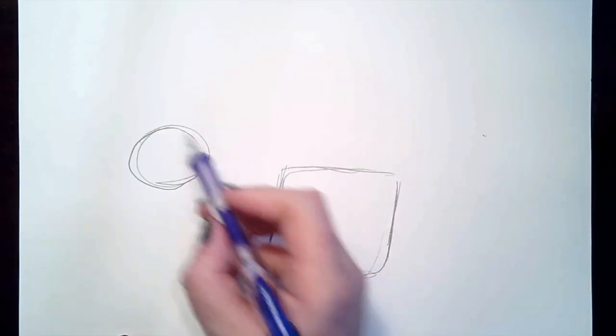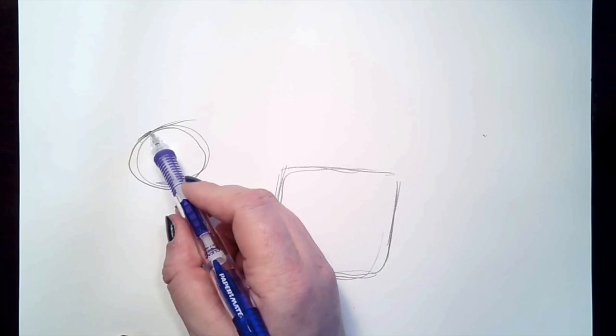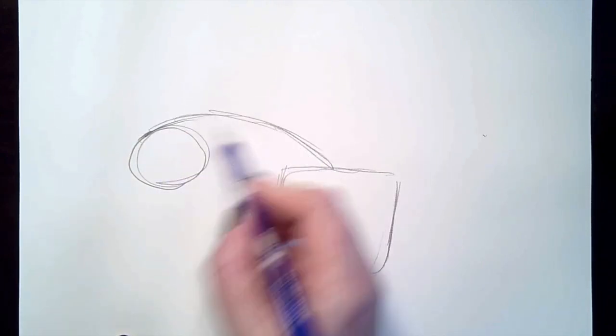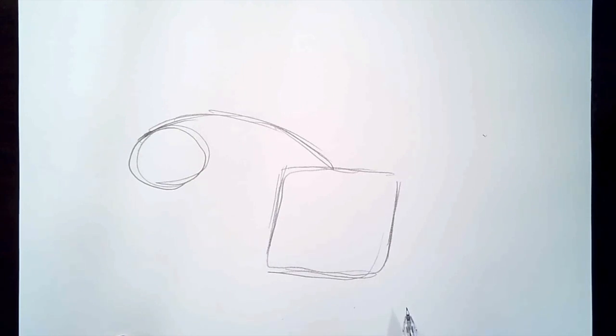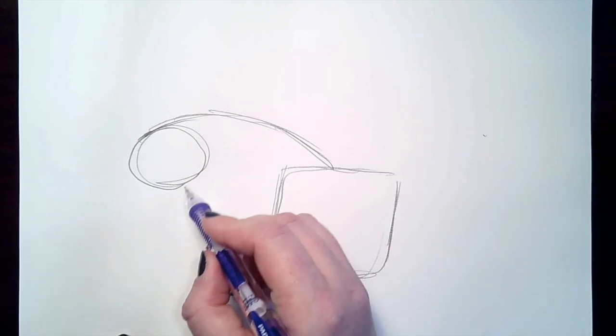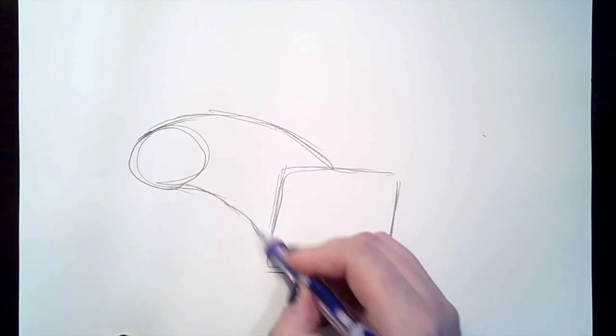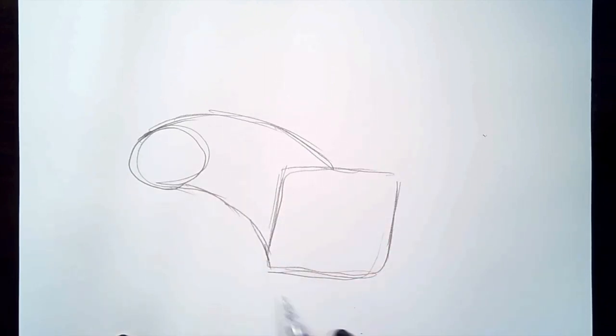And for the neck, they have a really arched neck, so we're going to, off the top of our circle, curve it down into the middle of our square. And then for the other side of the neck, off the bottom of our circle, that goes down to the bottom corner of our square.